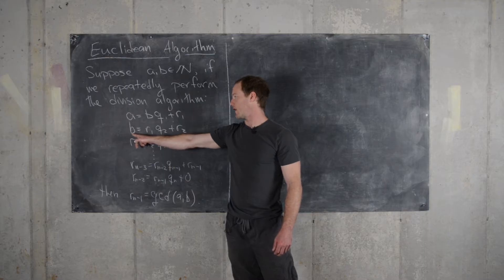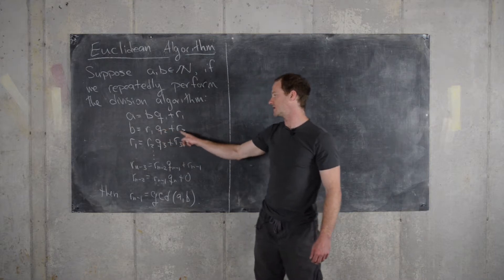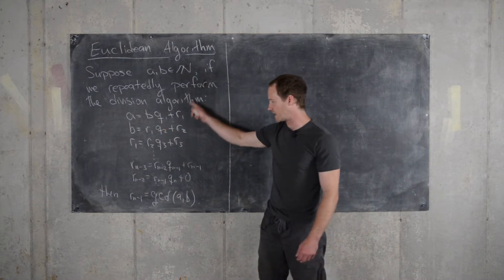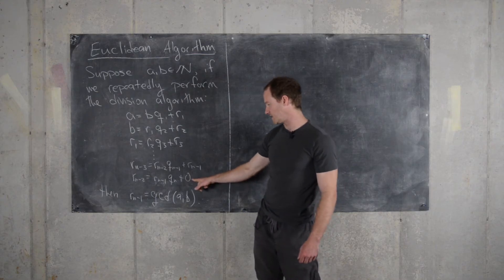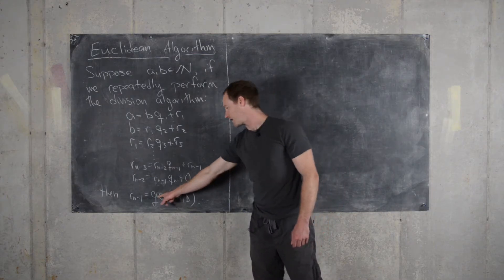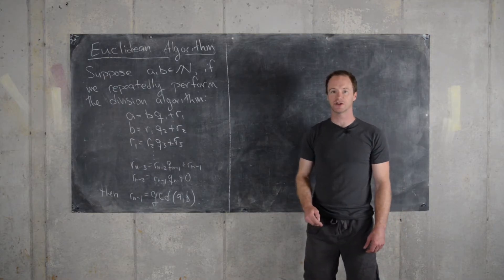Then we have B equals the first remainder times the second quotient plus the second remainder. And if we continually do that, then not only do we eventually get zero as the remainder, but the last non-zero remainder happens to be the GCD of the original two numbers.